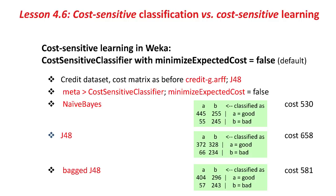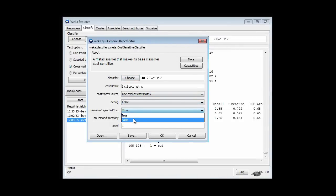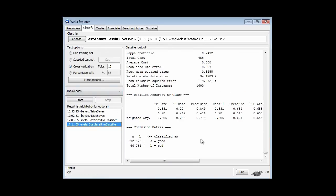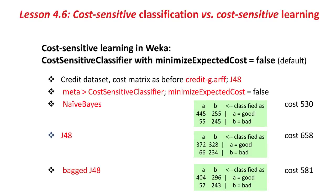Here we are with... Let's use J48 first, and we're going to set minimize expected cost to false, and run that. Now we get a total cost of 658 with this confusion matrix. That corresponds to the middle line on this slide, J48, a cost of 658. If we were to use Naive Bayes, we'd get a cost of 530, and if we used bagged J48, we'd get a cost of 581.